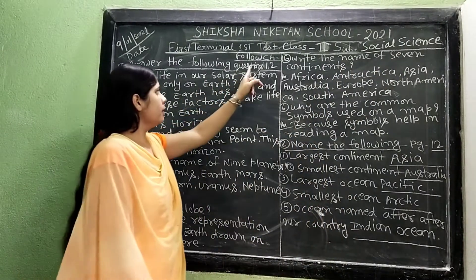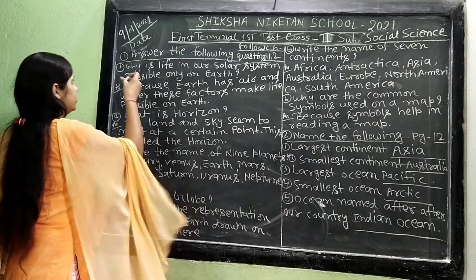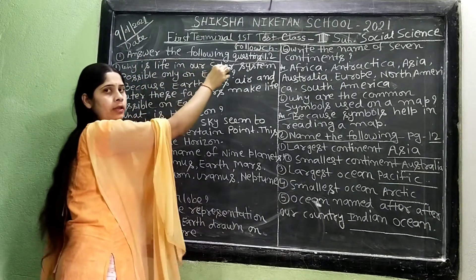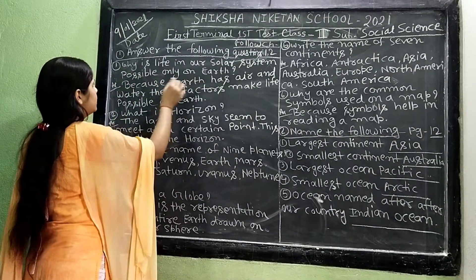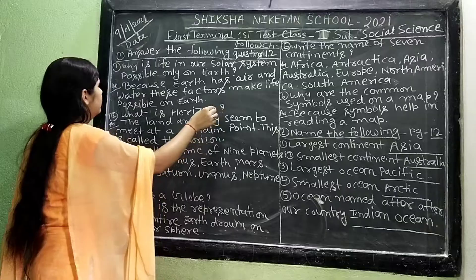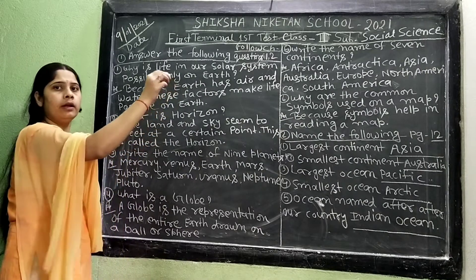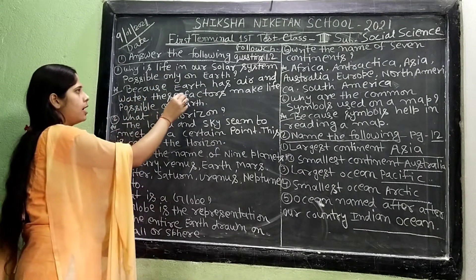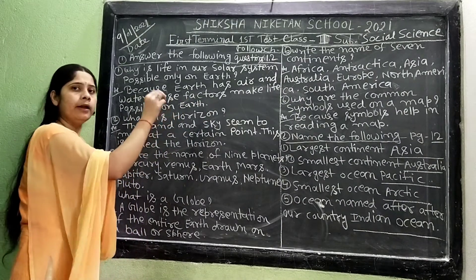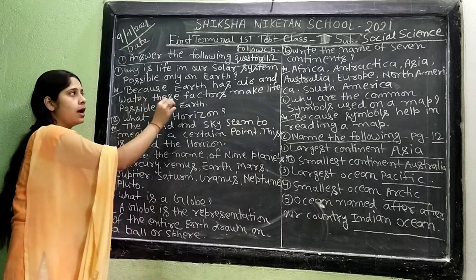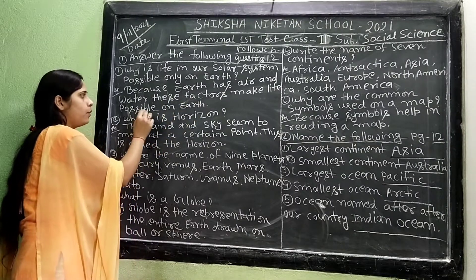Follow chapters 1 and 2. Matter number 1: Answer the following questions. Question number 1: Why is life in our solar system possible only on Earth? Answer: Because Earth has air and water — these factors make life possible on Earth.